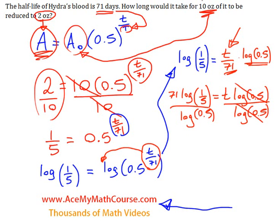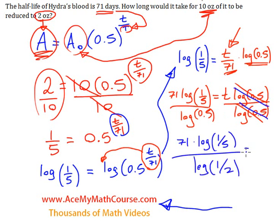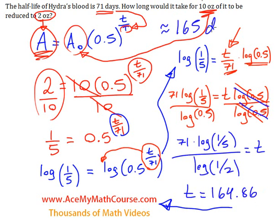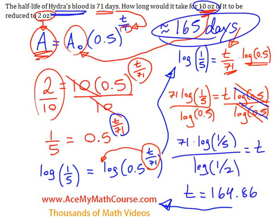We end up with t equals 71 times the log of 1 over 5, divided by log of one-half. Plugging that into the calculator: 71 times log of 1 over 5, divided by 0.5, gives t equal to approximately 164.86. So it takes roughly 165 days for the blood of the Hydra to go from 10 ounces down to 2 ounces.